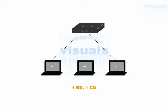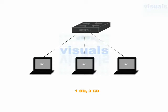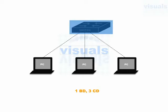In the second scenario with a switch: each port of a switch provides a separate collision domain and a switch as a whole provides a single broadcast domain. With three connections through the switch, there are three collision domains and one broadcast domain as a whole.